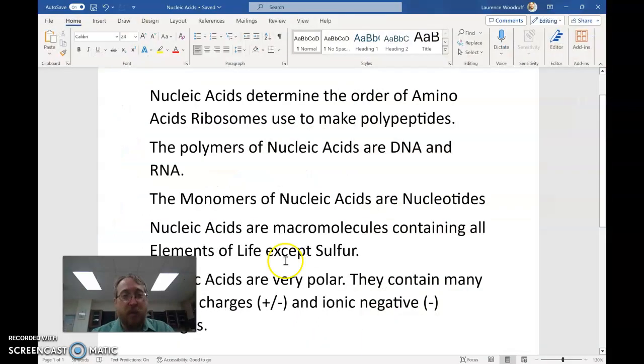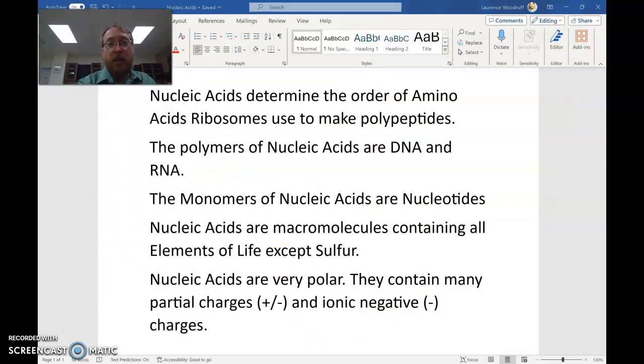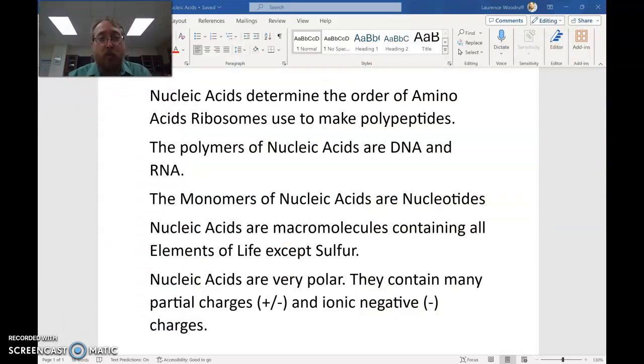Let's review this introduction. Nucleic acids determine the order of amino acids ribosomes use to make polypeptides. The polymers of nucleic acids are DNA and RNA. The monomers of nucleic acids are nucleotides. The nucleic acids are macromolecules containing all elements of life except for sulfur, and the nucleic acids are very polar, containing many partial charges and ionic negative charges.